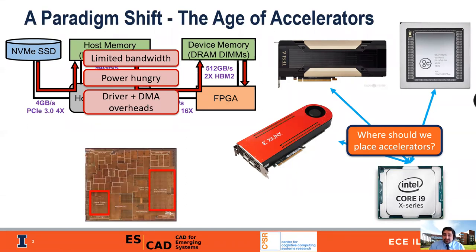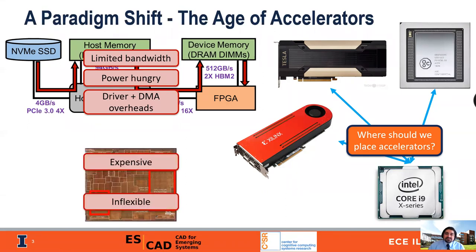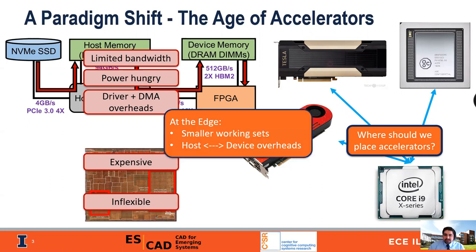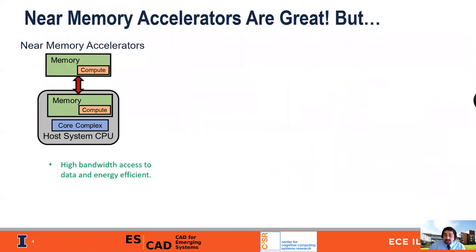We could go for an SOC solution and integrate accelerators on-chip, but this is expensive and has limited flexibility. Crucially, if we think about edge computing, the working sets here are a lot smaller. Therefore, the cost of moving data from host to device and back can have a lot of overheads. So something like near-memory accelerators seems like a very attractive option — you have high bandwidth access to data and it's energy efficient.